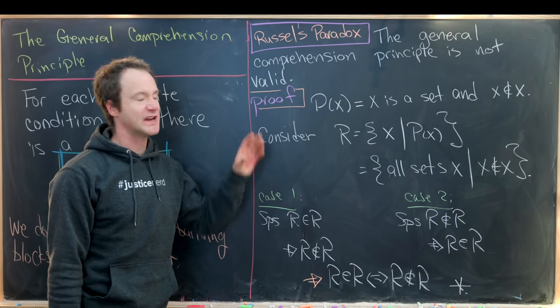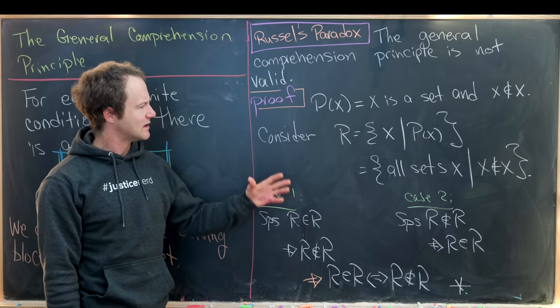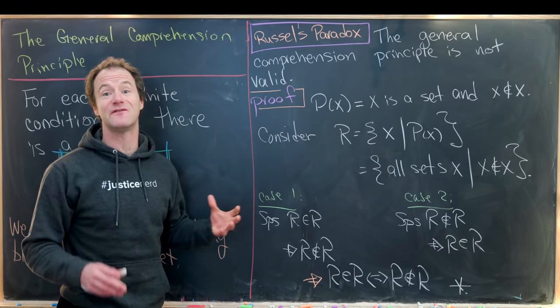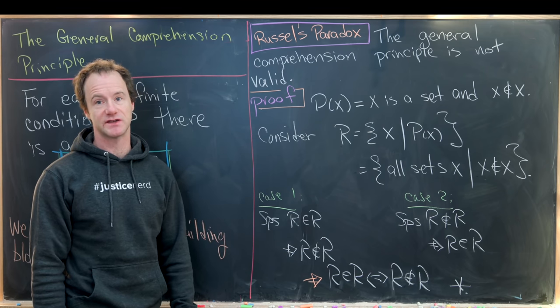So that finishes this proof. And now let's see how we can use this proof to show that there is in fact no set of all sets.